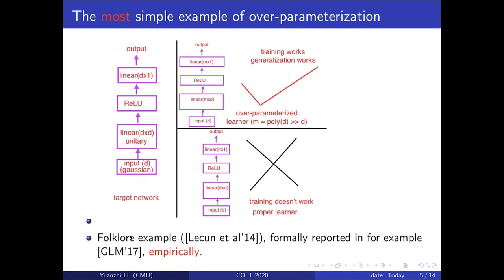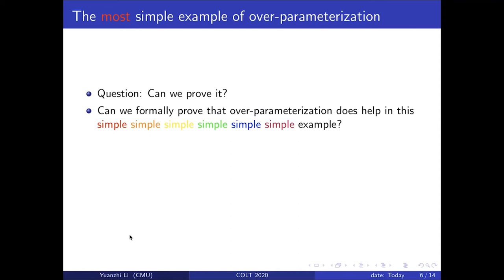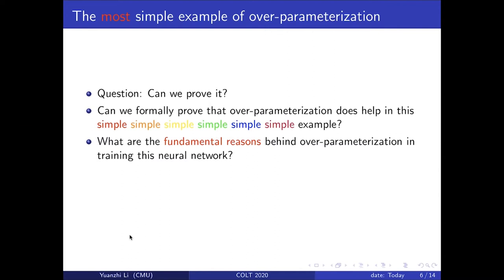This is a folklore example formally reported in some prior works. The question is: can we prove it? Can we formally prove that over-parameterization helps in this extremely simple example, and what are the fundamental reasons behind why over-parameterization helps in training this learner network to learn this particular target function?